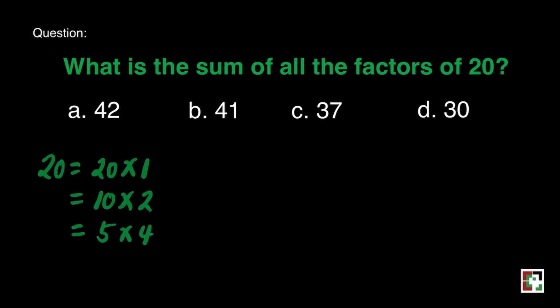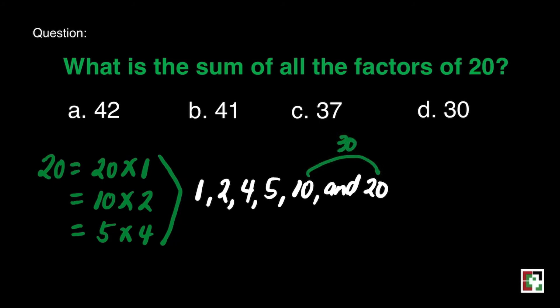We can list from the least to the greatest. That's starting from 1, 2, 4, 5, 10, and 20. Let's add all of these factors. We may start from 10 and 20. That is 30. We will add also 4 and 5. That's 9. And 1 and 2 is 3. Just add all these numbers and we get 42. And that is our final answer. That's letter A.